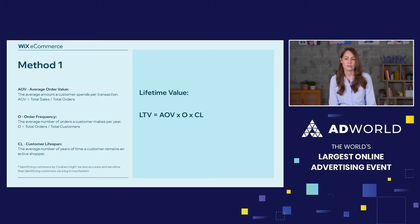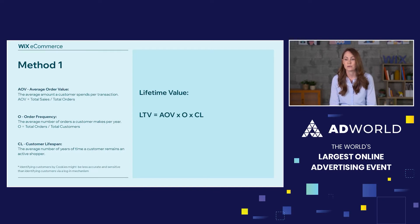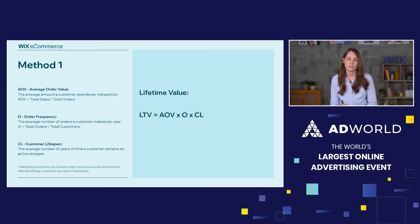Let's break down those metrics. Average order value is the average amount customers spend per transaction. Order frequency is the average number of orders customers make per year. Customer lifespan is the average number of years a customer remains an active shopper. One small note: identifying customers by cookies might be less accurate than identifying customers via a login mechanism, so take that into account when calculating lifetime value.